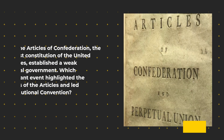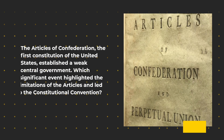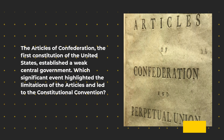The Articles of Confederation, the first constitution of the United States, established a weak central government. Which significant event highlighted the limitations of the Articles and led to the Constitutional Convention?